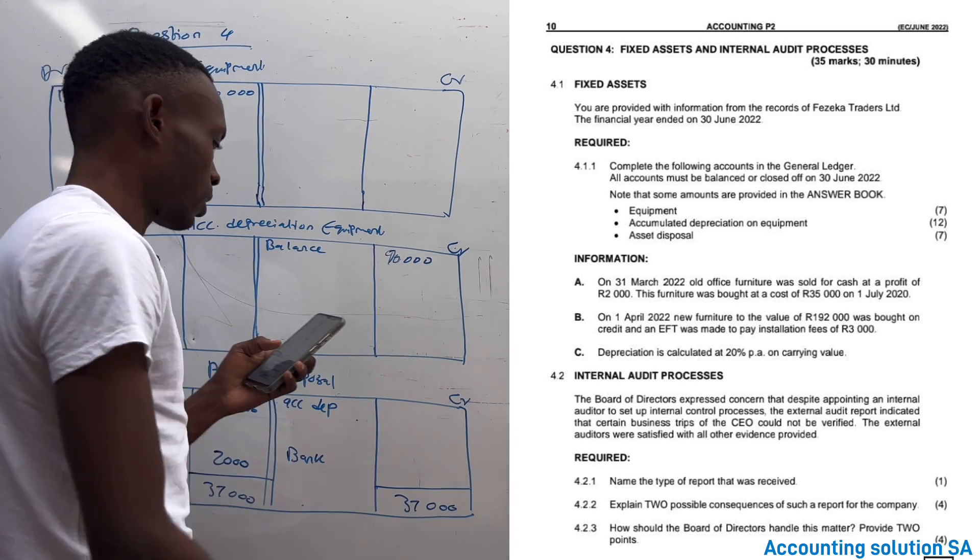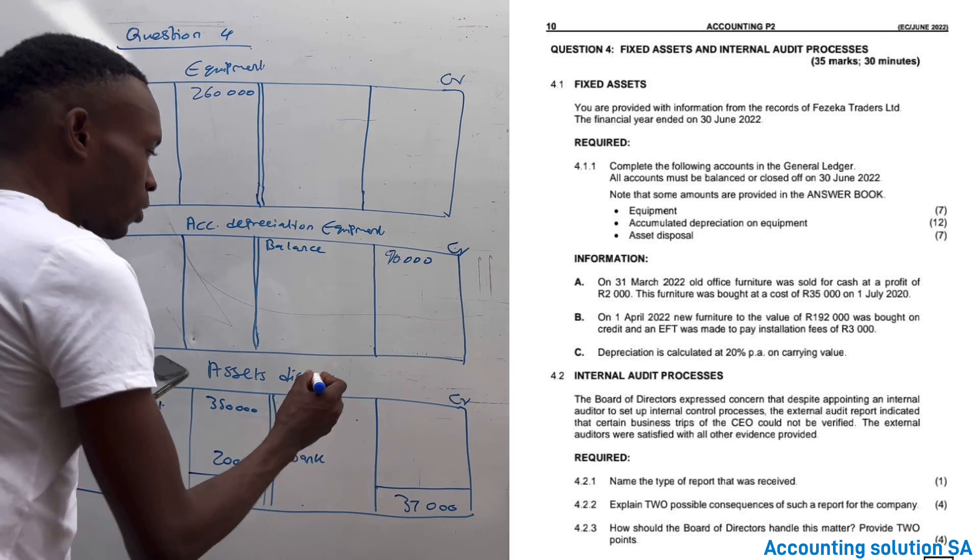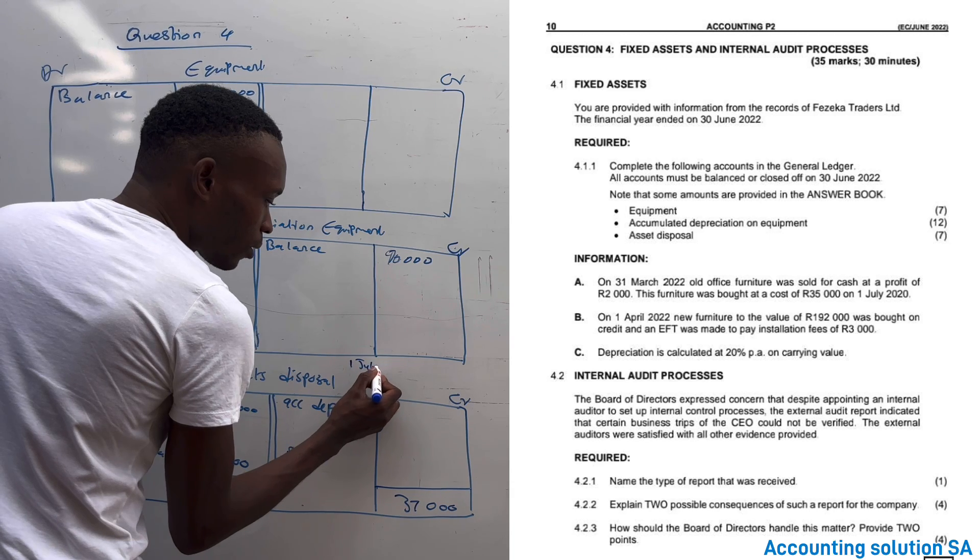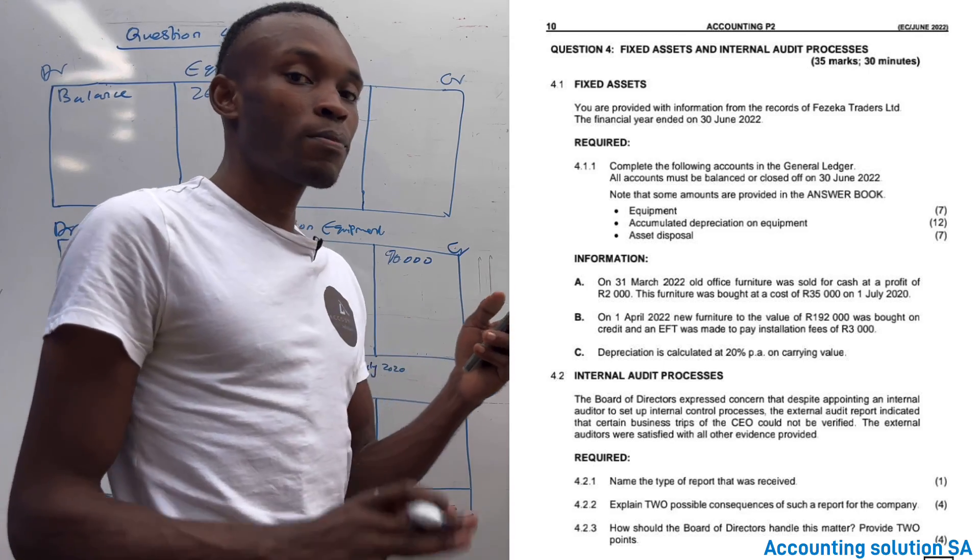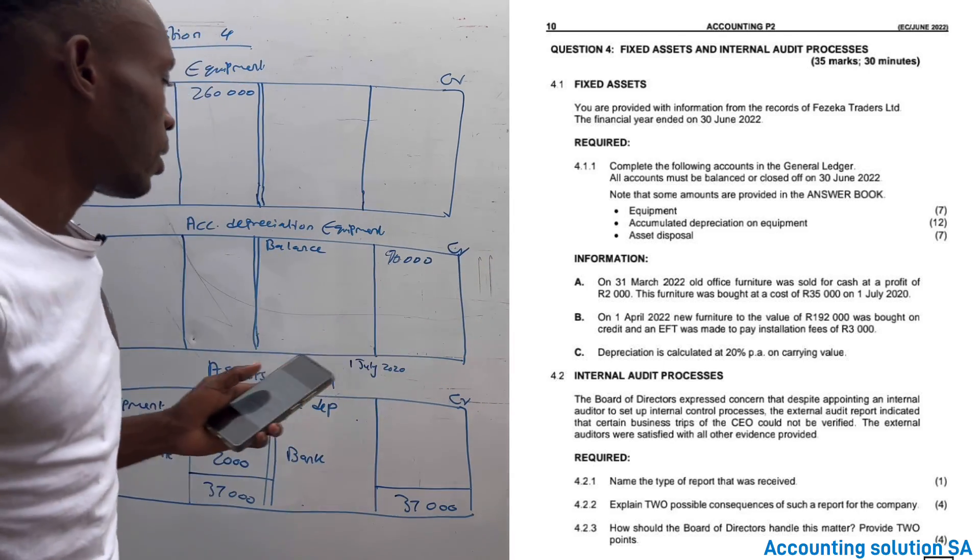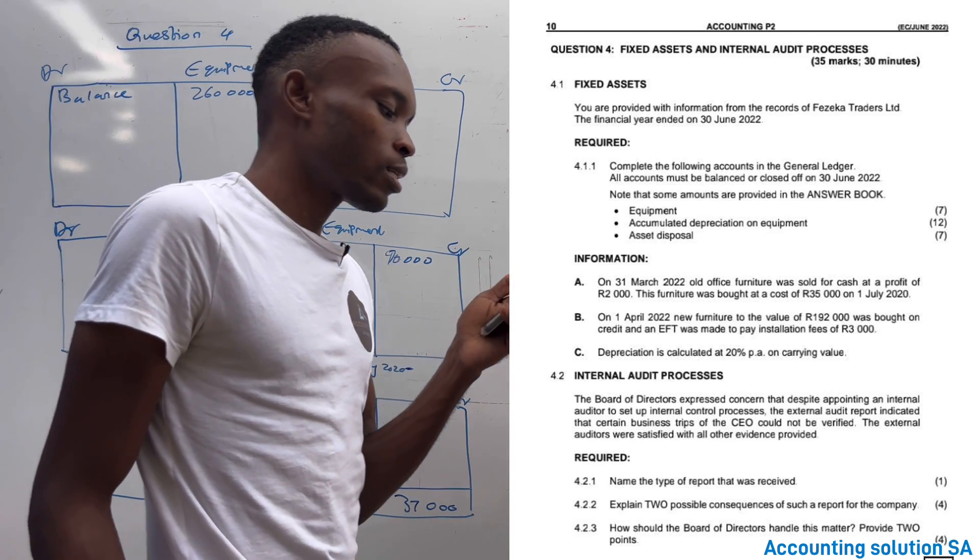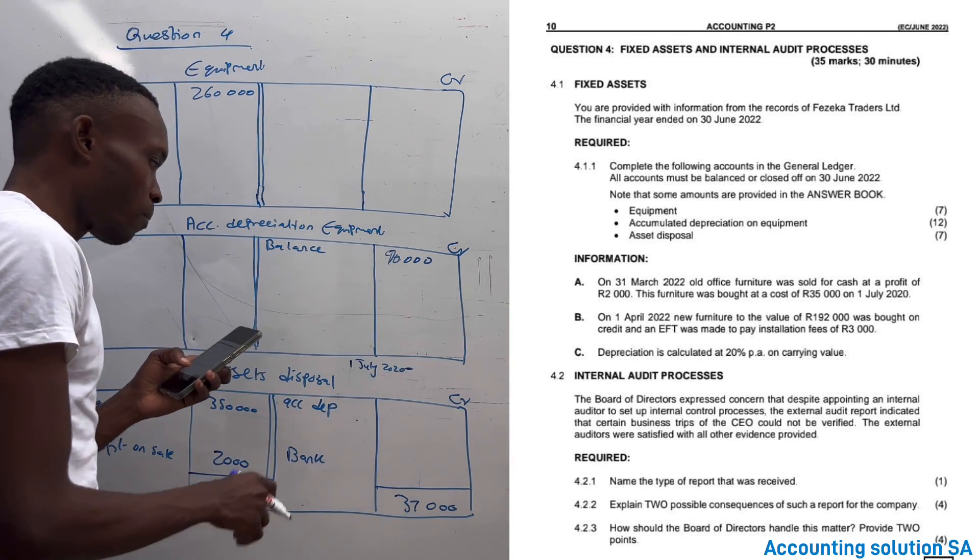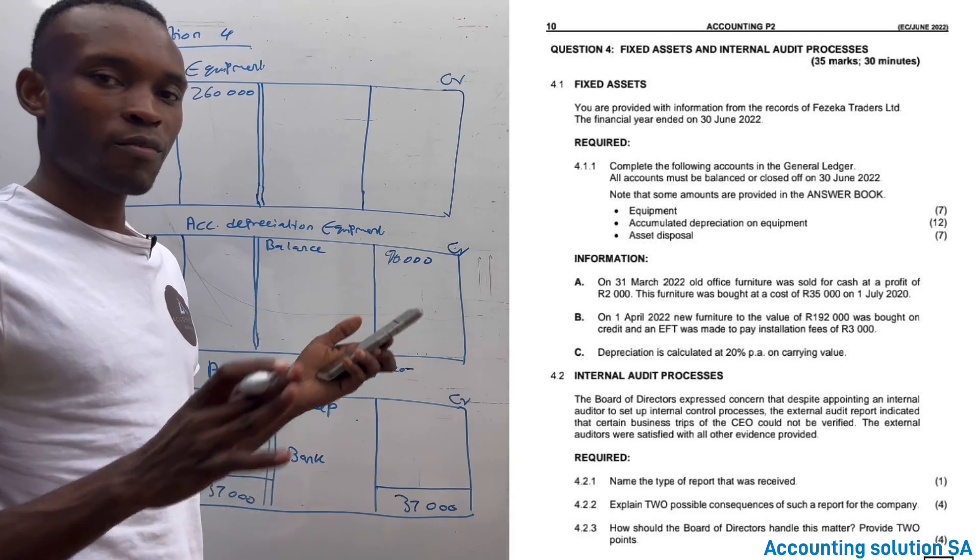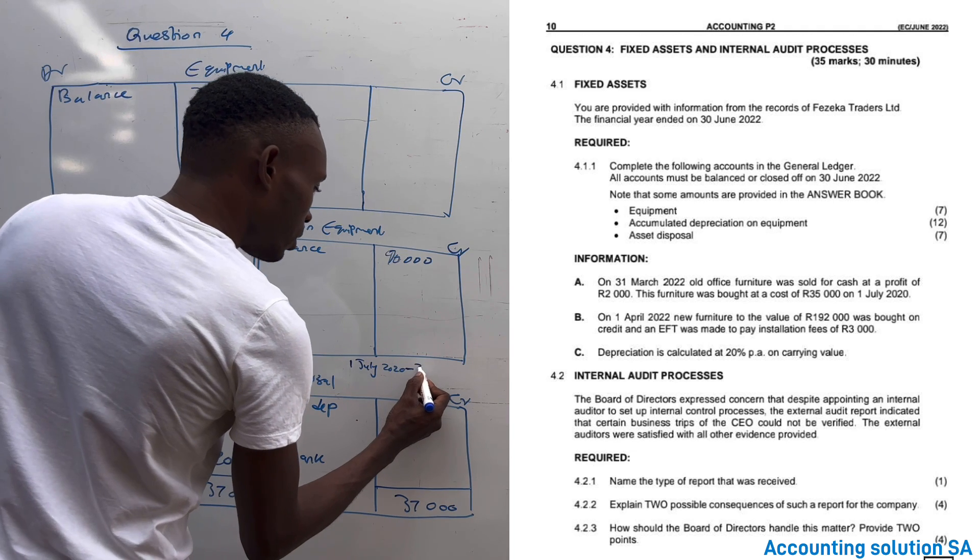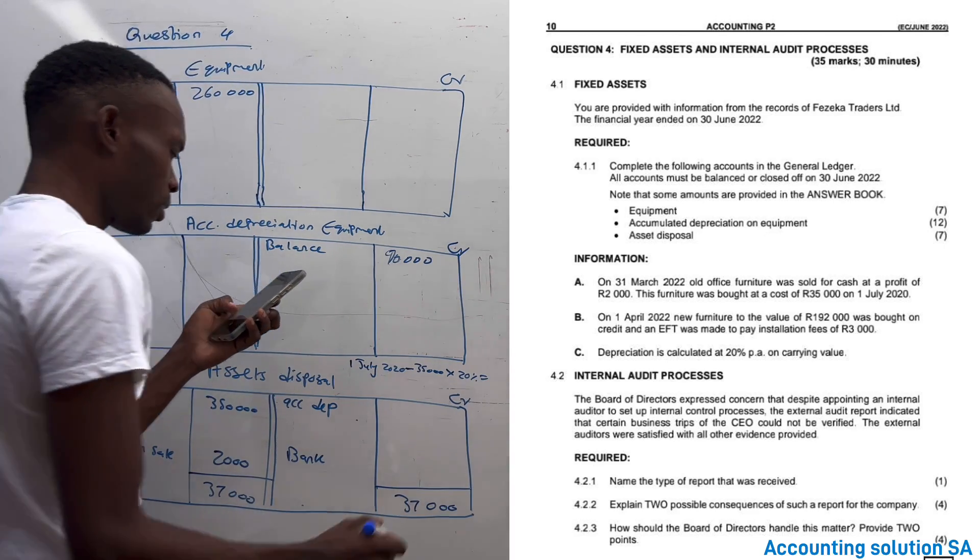We must find depreciation first. How are we going to calculate depreciation? They say that it was bought 1 July 2020, we have to calculate depreciation from 1 July 2020 until it is sold on 2022, which means that there is somehow almost like two years. Let's start by calculating the first one. Let's check the policy: depreciation is calculated at 20% per annum on carrying value diminishing balance method. But on year one, diminishing balance method is like a cost price because we don't have what accumulated, because it's still zero.